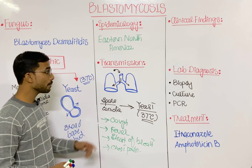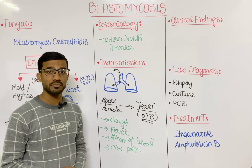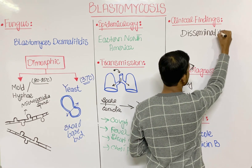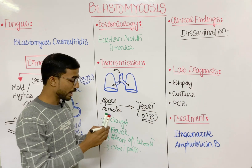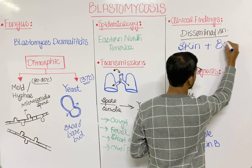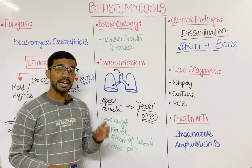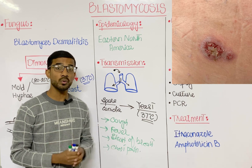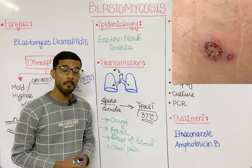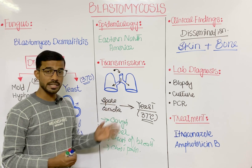The infection can disseminate to other organs. The two most important organs affected by dissemination are the skin and the bone, especially in immunocompromised patients. On the skin, you will see ulcerated granulomas — lesions caused by disseminated blastomycosis.